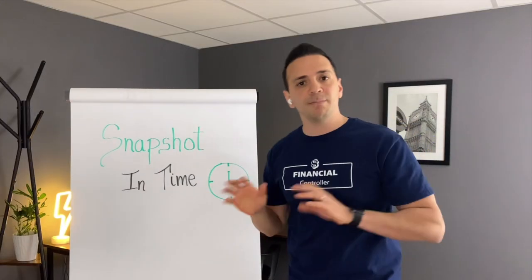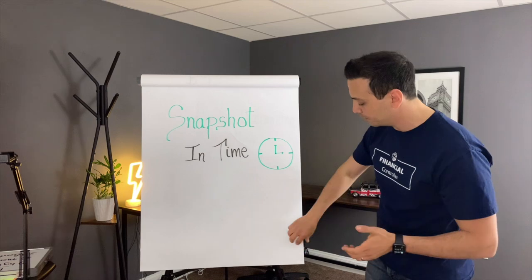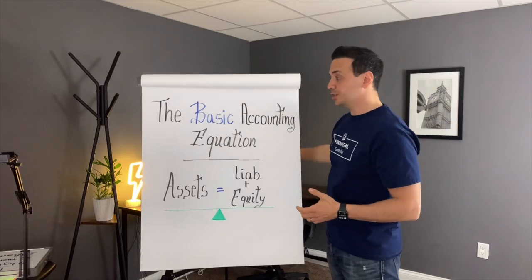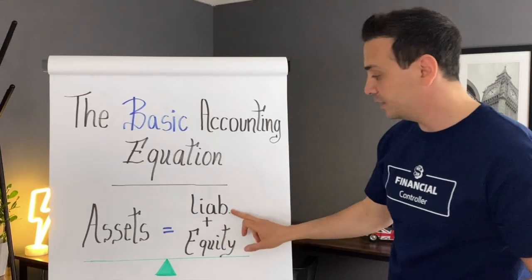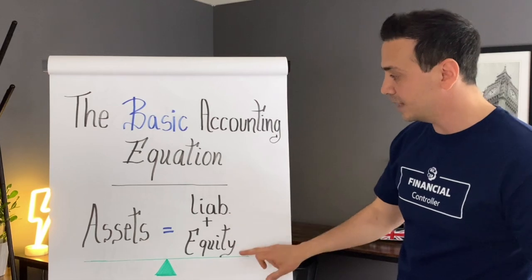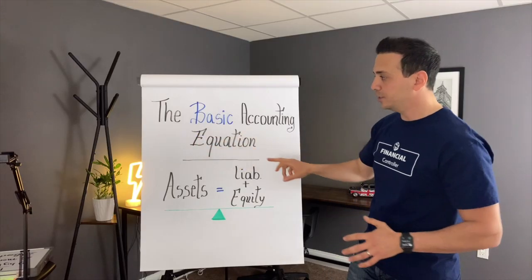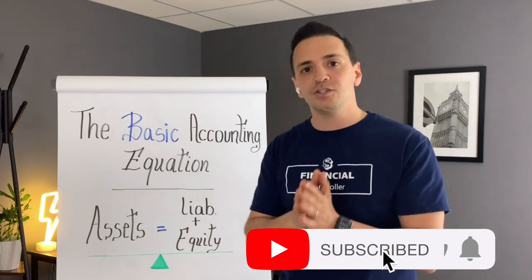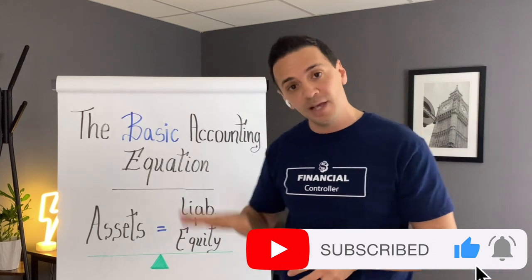The balance sheet is as of a snapshot in time or the end of the accounting period. Now, what goes into the actual balance sheet? What goes into the balance sheet is assets, liabilities, and equity. Assets equals liabilities plus equity — we call this the basic accounting equation. Quite frankly, if you understand this concept, you've understood half of accounting. It's really important and really easy to grasp.